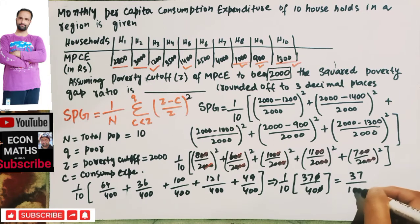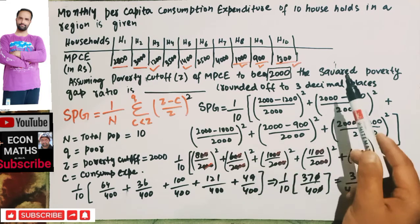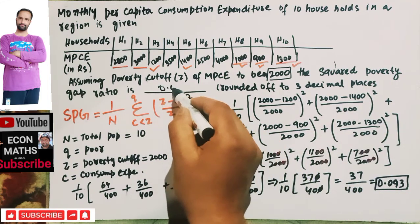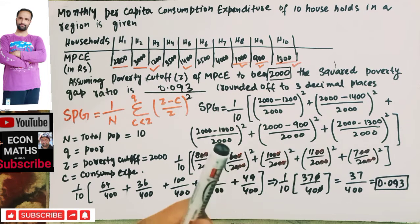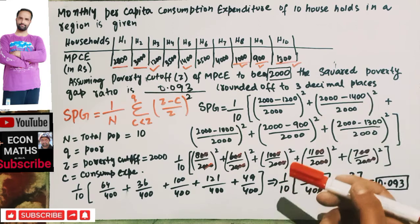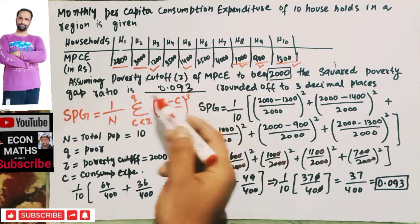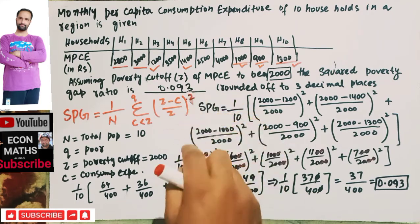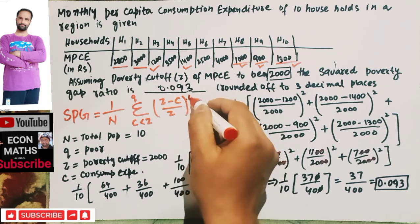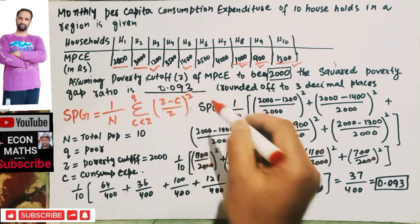Solving 37/400 gives us 0.093. So our squared poverty gap ratio is 0.093. This is also called the poverty severity index — it gives the weighted sum of poverty gaps as a proportion of the poverty line. In general, for the FGT class: if the exponent is 0, we get the headcount ratio; if it is 1, the poverty gap ratio; and if it is 2, the squared poverty gap ratio.